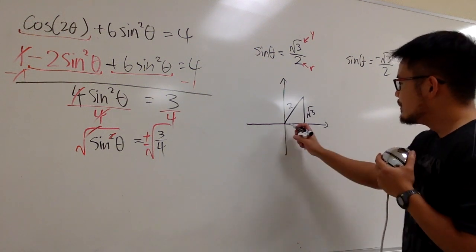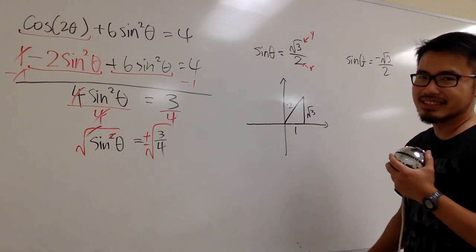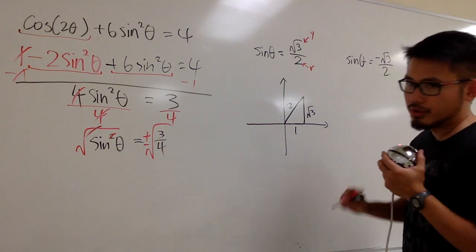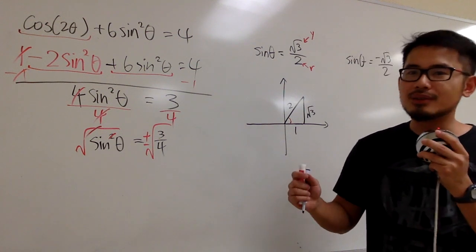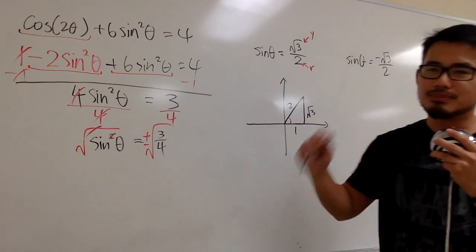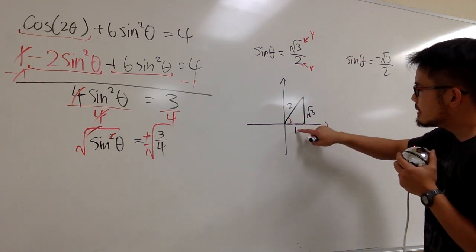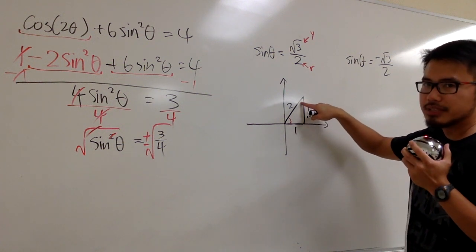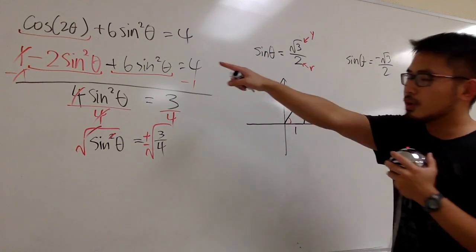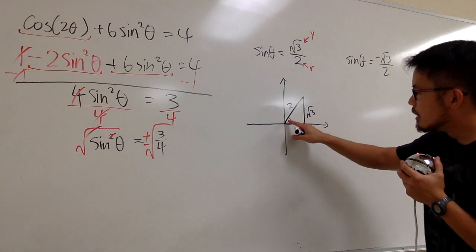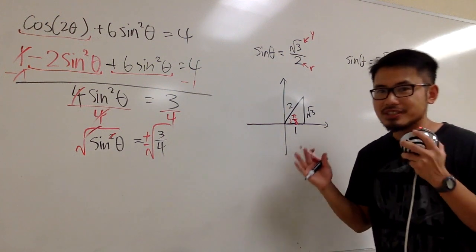Now, when you have this picture, all we have to do is figure out what this angle is by remembering the special right triangle. This is a 30-60-90 special right triangle. Since this side is 1, that means this has to be the 30-degree angle — the smallest angle — and this other angle has to be 60 degrees. We're going to write the answers in radians, so 60 degrees is pi over 3. That's our first answer: theta equals pi over 3.